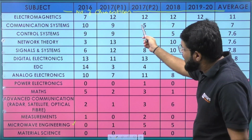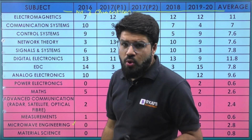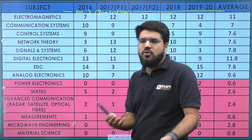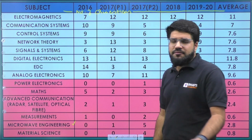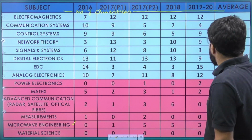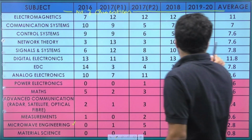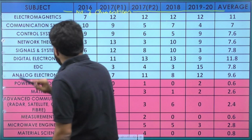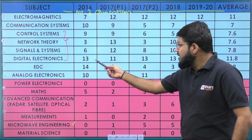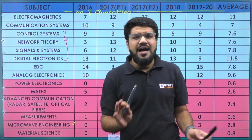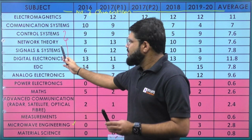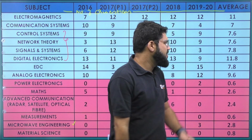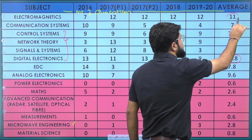For electromagnetics, the questions across the five papers were 7, 12, 12, 12, 12 — averaging around 11. Microwave is separated out. For communication: 10, 9, 5, 7, 4 — averaging around 7, though it can increase any time as it's a core area. Control systems: 9, 9, 6, 5, 9 — averaging around 7.6, so expect about 8 questions. Networks and signals are also similar averages, all being scoring areas.